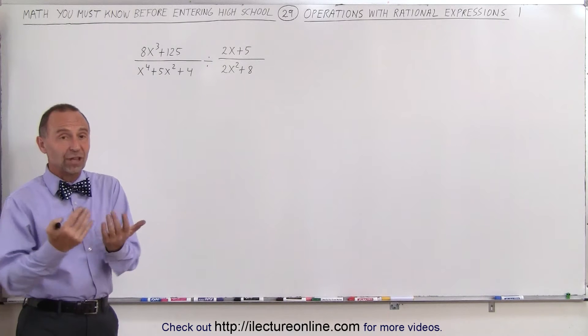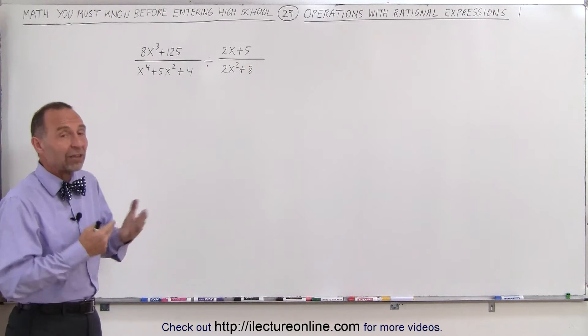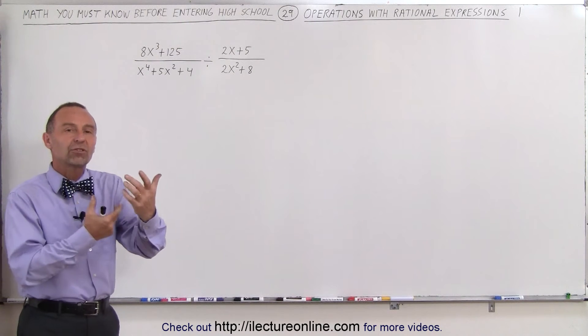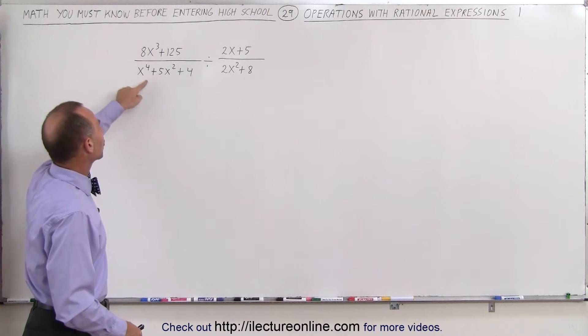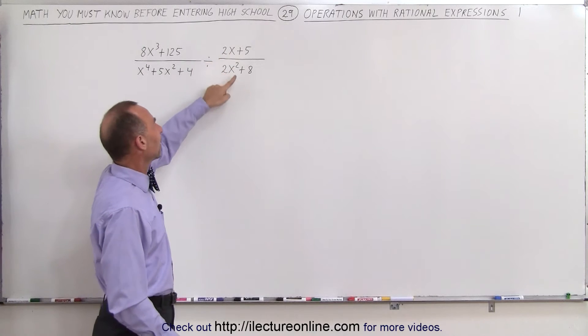First of all, we have to understand what a rational expression is. A rational expression is an expression in fraction format. So here you can see a binomial divided by a trinomial, a binomial divided by a binomial - these are what we call rational expressions, simply polynomials that are in fraction format.